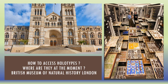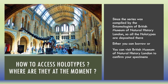The question is: how do you access the holotypes which are present in the Fauna of British India? Since several new species are described in that series, those holotypes are present in the British Museum of Natural History, London. Since the series was compiled by entomologists of the British Museum of Natural History, all the holotypes are deposited there — you can borrow them or visit to confirm your specimens.